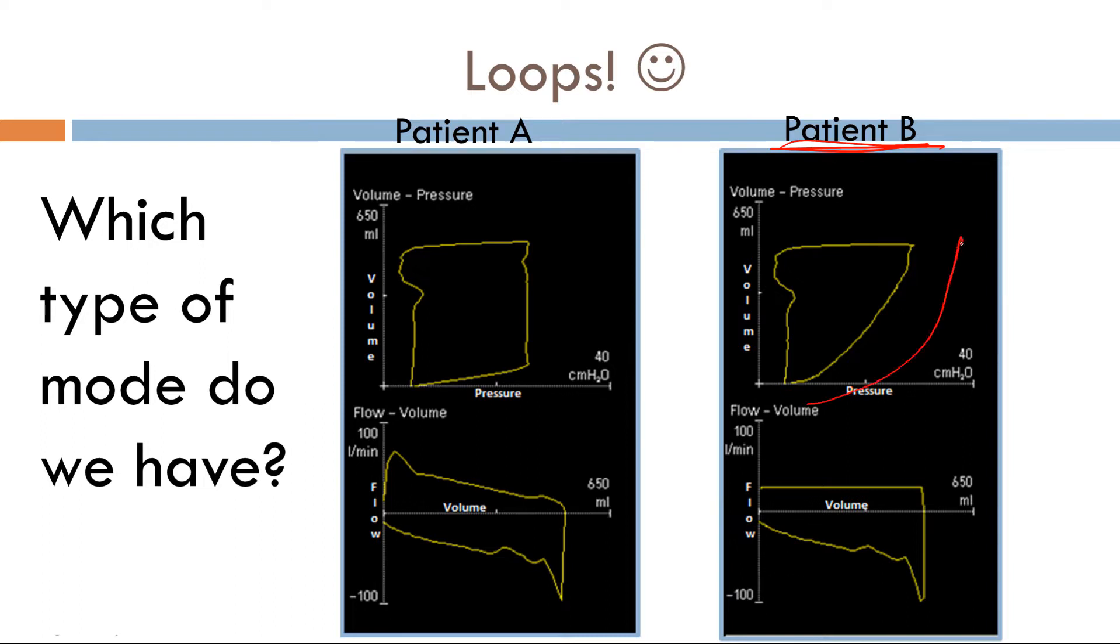So again, we have inspiration here, expiration here, inspiration here, expiration here. Now, during the inspiratory phase, the target variable should be constant. So look right here. Flow is completely constant during the inspiratory phase here.